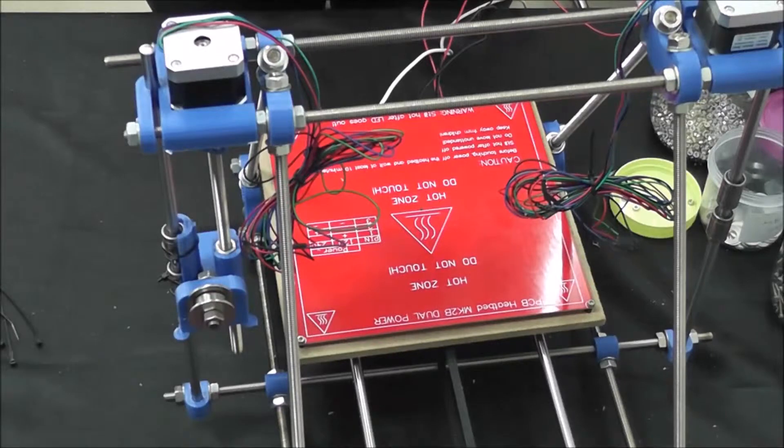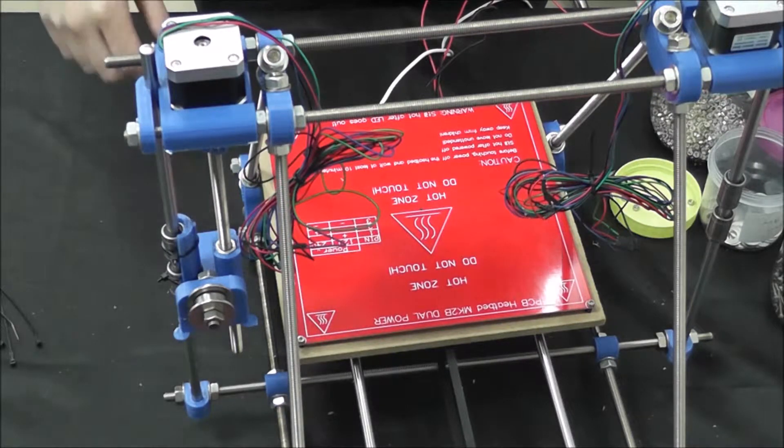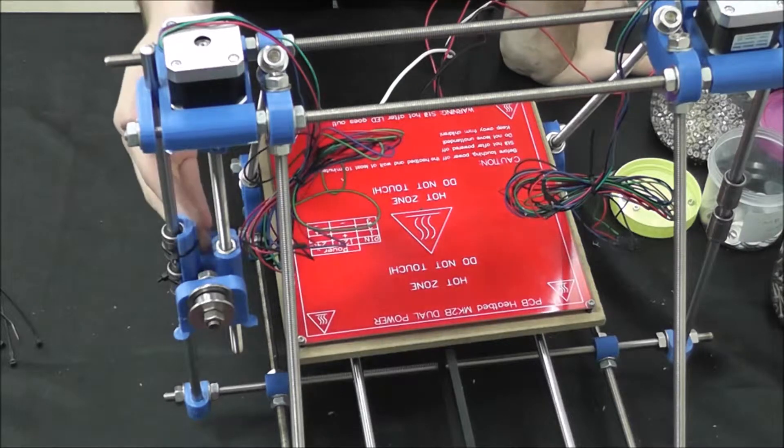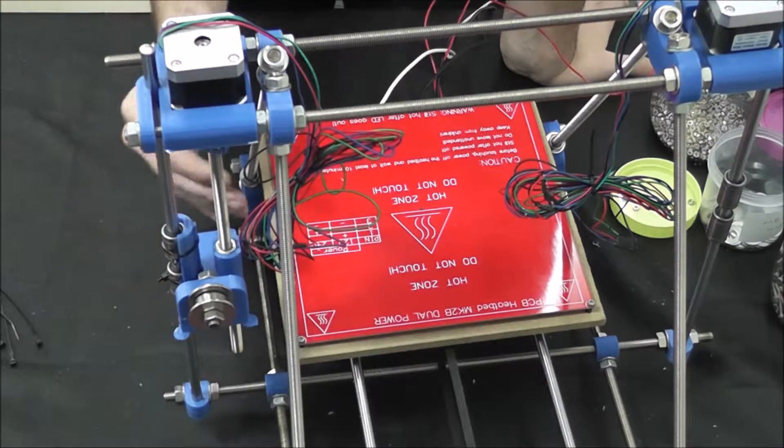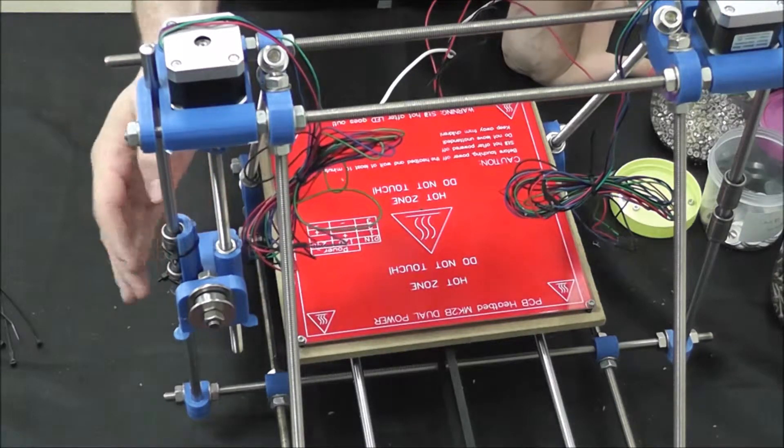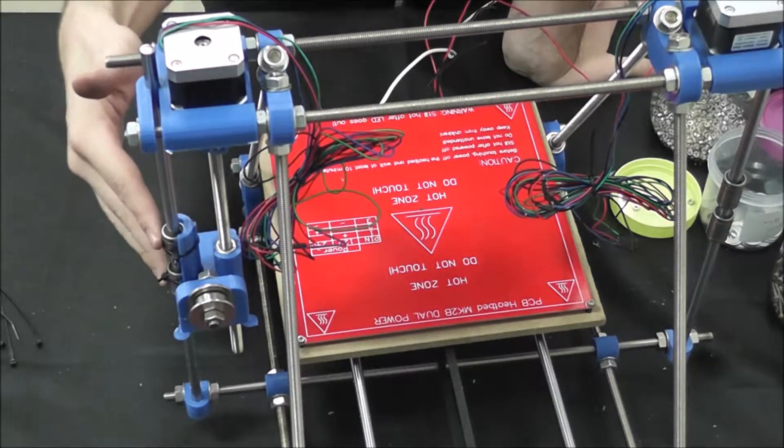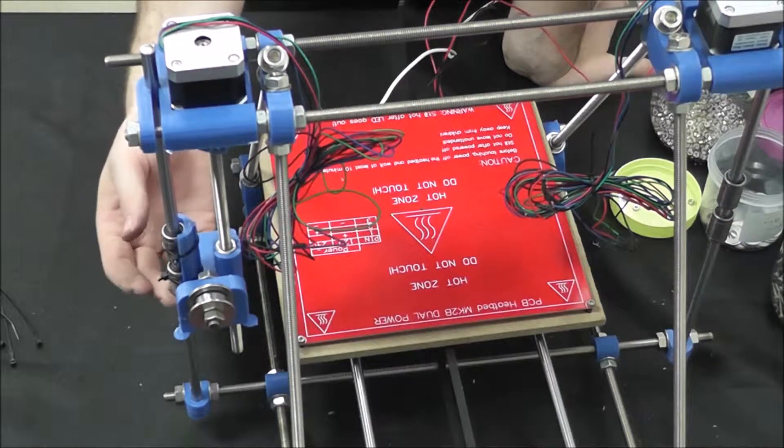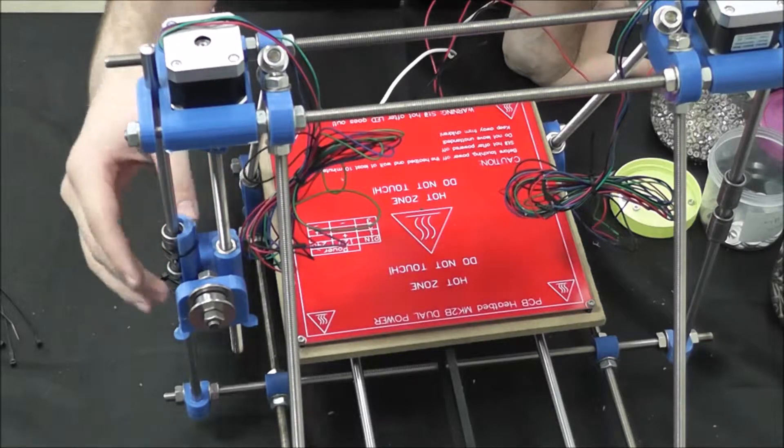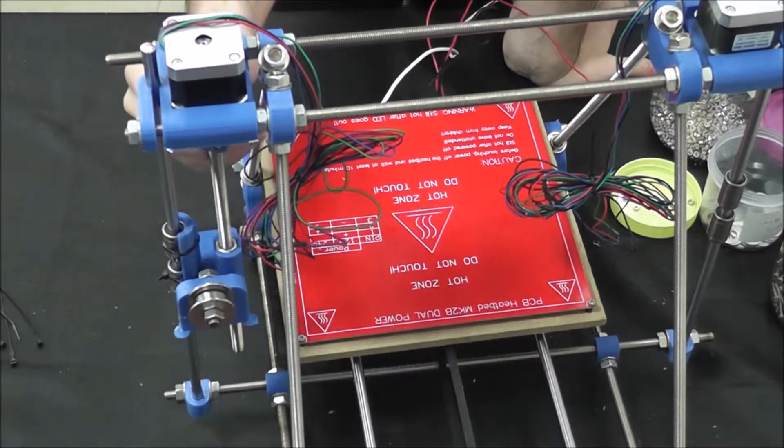Alright, we've got both the X idler and the X motor mount tightened up. We went ahead and attached one so you could see a finished end. Basically, all we did was put the bearings in the spot where the grooves are meant to be and zip tied them in there.